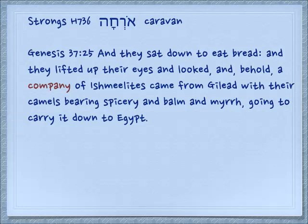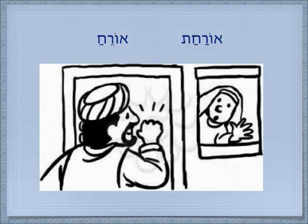Genesis 37:25: 'And they sat down to eat bread, and they lifted up their eyes and looked. And behold, a company of Ishmaelites came from Gilead with their camels, bearing spicery and balm and myrrh, going to carry it down to Egypt.' And they carried Joseph with them. This root is more common in modern Hebrew as the word for guest — the male guest is oreach, and the female guest is orachat.